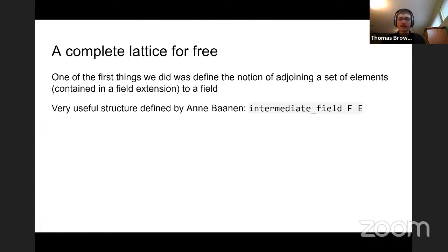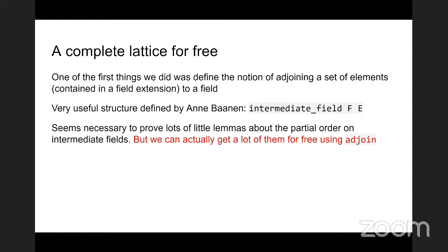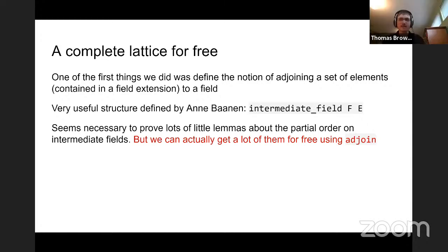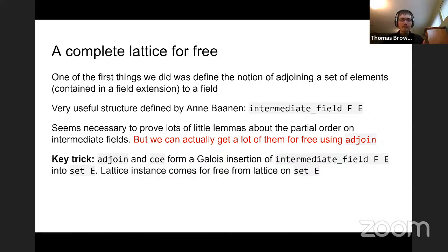When the intermediate field type was initially defined, not much was proved about it. There was a partial ordering on it, but we didn't know many things about the partial order — like that you could take intersections or composites. It seemed like we'd have to do a lot of work proving many little lemmas about these operations. But one thing that really surprised us is that the notion of adjoining elements to fields actually allowed us to get a lot of these facts about the partial order for free.